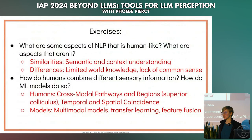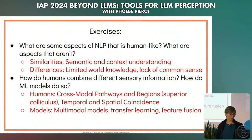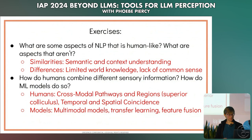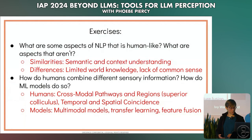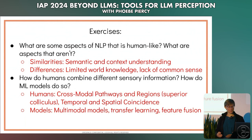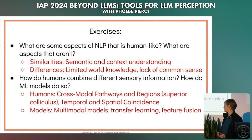First, I'm going to go over the exercises that Jeremy gave on Monday for perception as a topic. What are some aspects of NLP that are human-like, and what aren't? Similarity might be semantic and context understanding; differences might include limited world knowledge and lack of common sense. How do humans combine different sensory information versus how ML models do so? Humans use cross-modal pathways and regions like the superior colliculus, temporal and spatial coincidence; models use multimodal models, transfer learning, and feature fusion.